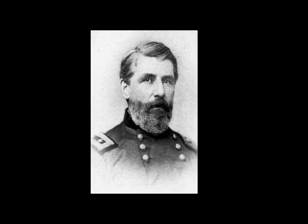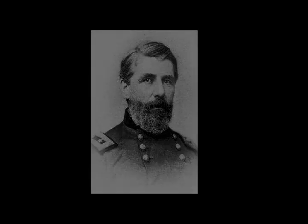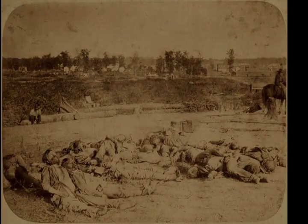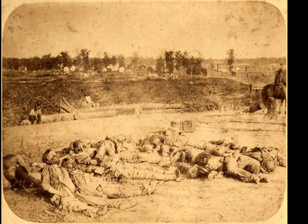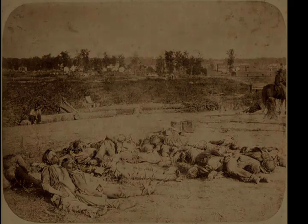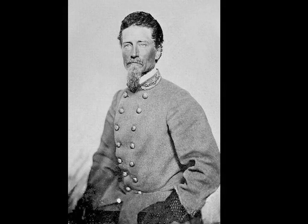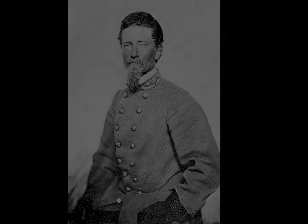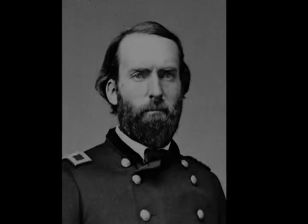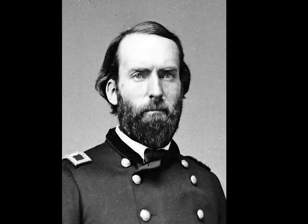Rosecrans's Army of the Mississippi was organized as follows. The Division of Brigadier General David S. Stanley included the brigades of Colonels John W. Fuller and Joseph A. Mower. The Division of Brigadier General Charles S. Hamilton included the brigades of Brigadier Generals Napoleon B. Buford and Jeremiah C. Sullivan. The Cavalry Division of Colonel John K. Mizner included the brigades of Colonels Edward Hatch and Albert L. Lee.